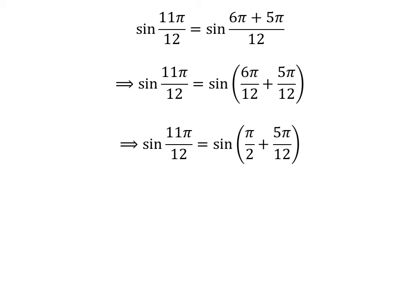Cancelling out the common factor in the numerator and the denominator in each fraction gives us sine of 11 times pi upon 12 is equal to sine of pi upon 2 plus 5 times pi upon 12.